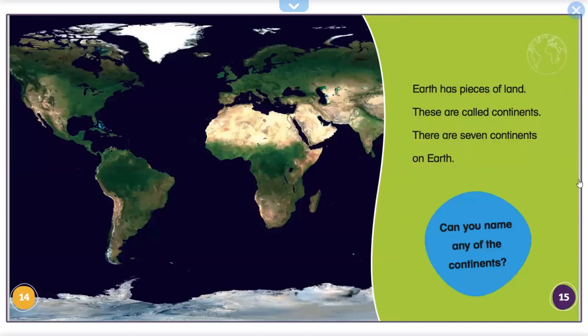Earth has pieces of land. These are called continents. There are seven continents on Earth. Can you name any of the continents?